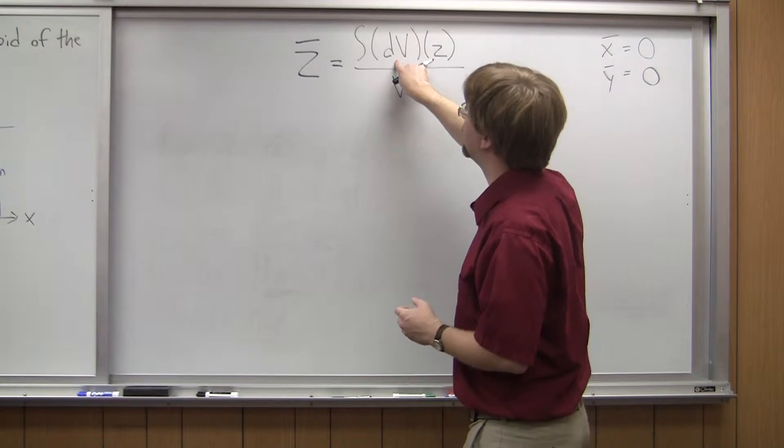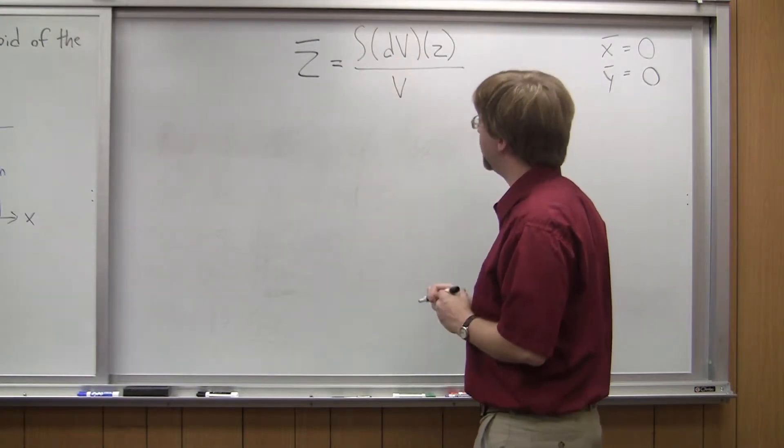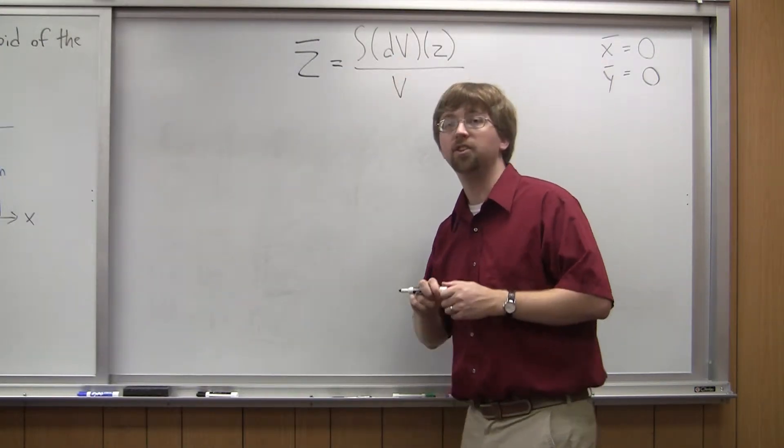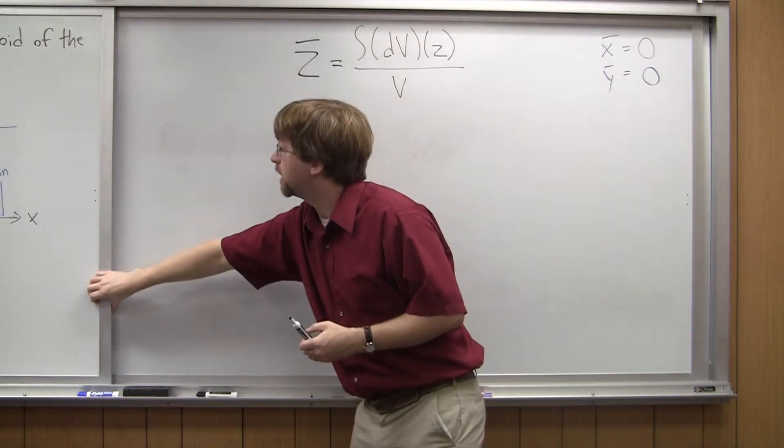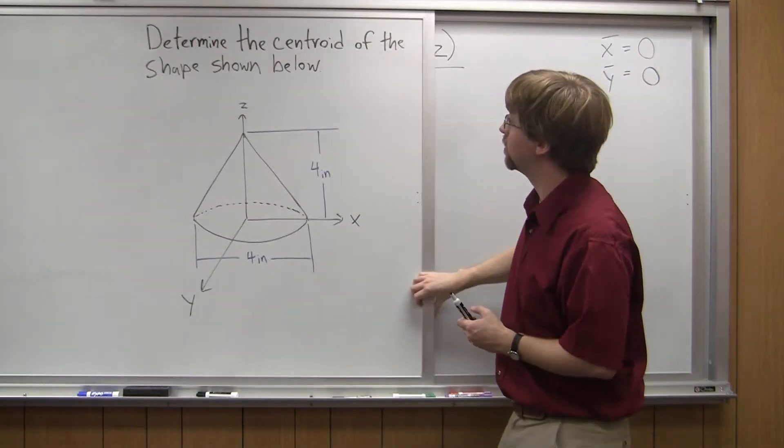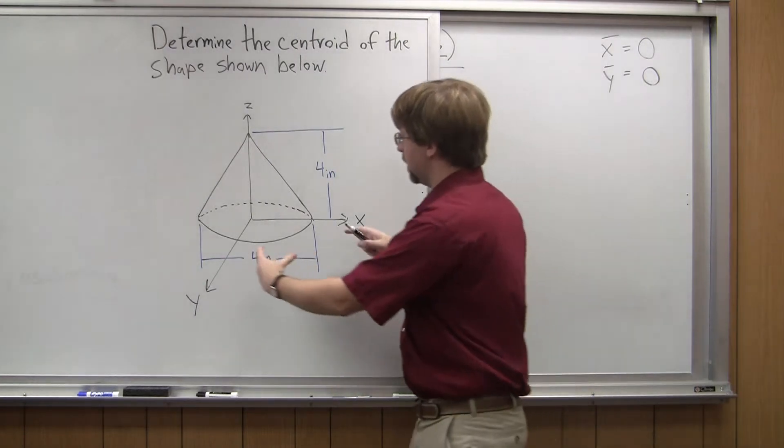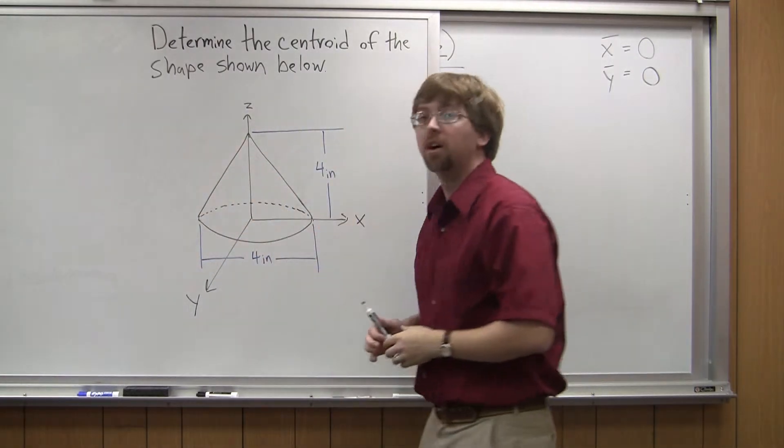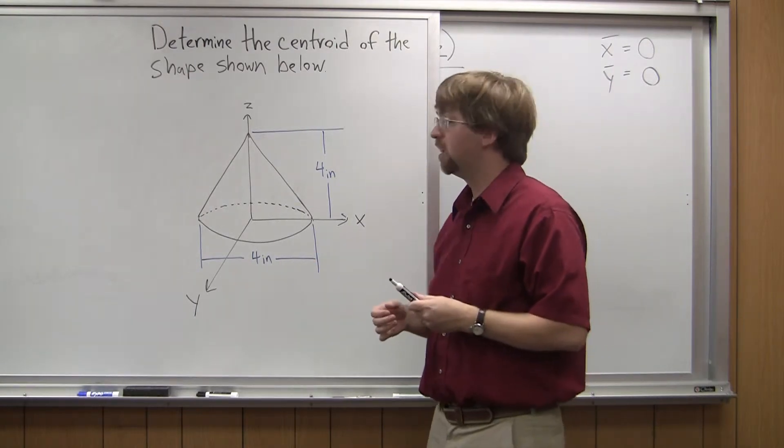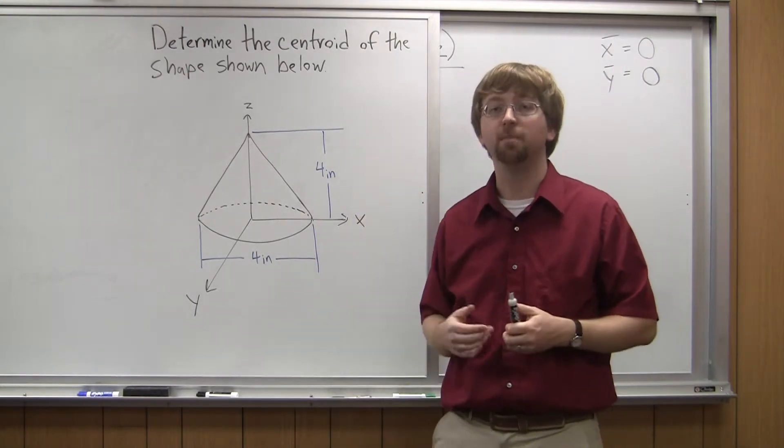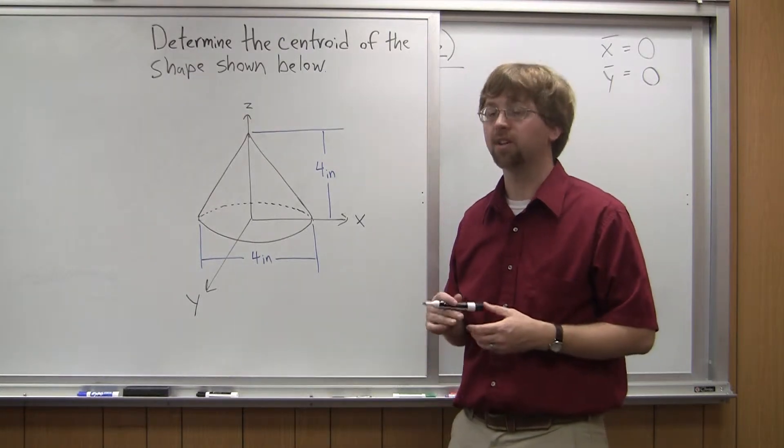But what I need to find is this dv. So dv is describing the change in volume as I move up the z-axis. So I can imagine, going back to my original diagram, as I go from z equals zero and I'm going up, I'm looking for the change in volume with respect to z. And the change in volume is going to be the area at any given cross-section.